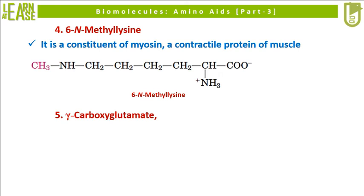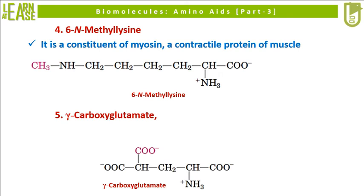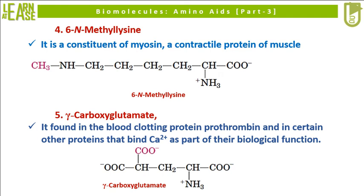The fifth uncommon amino acid is gamma-carboxyglutamate; its structure is shown here. Gamma-carboxyglutamate is found in the blood clotting protein prothrombin and in certain other proteins that bind calcium as part of their biological function.